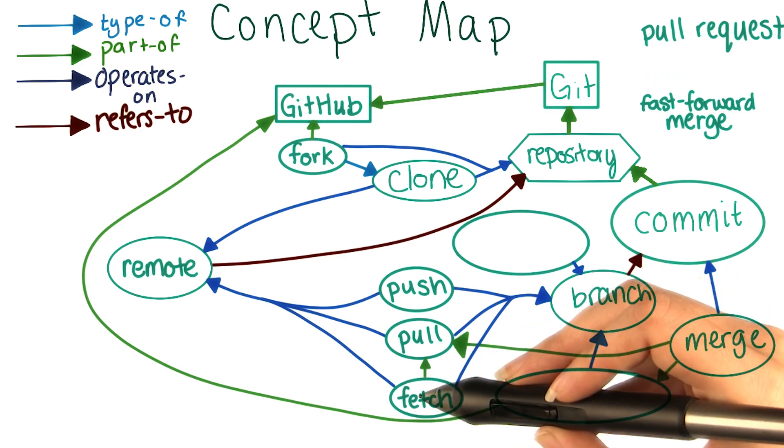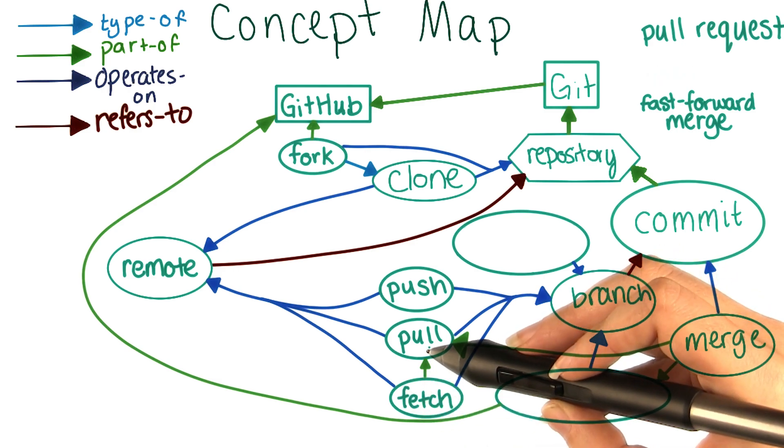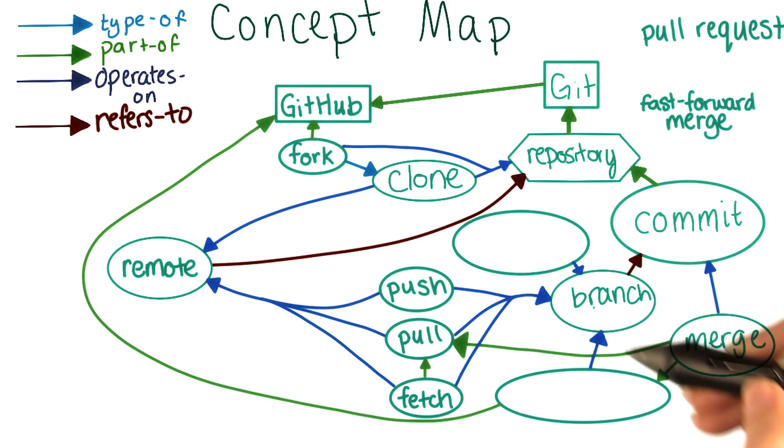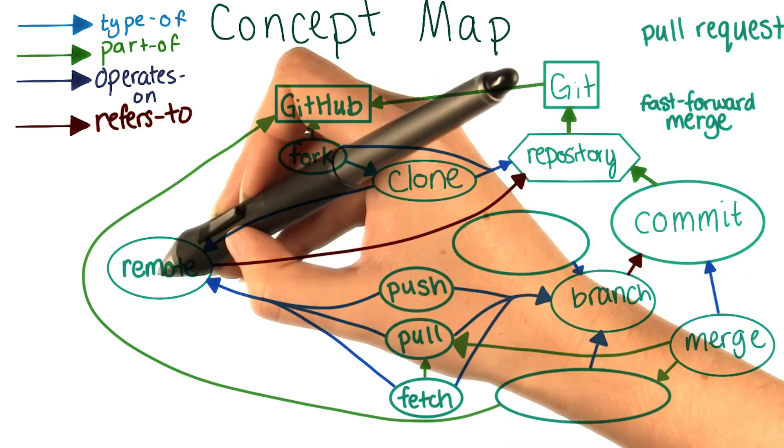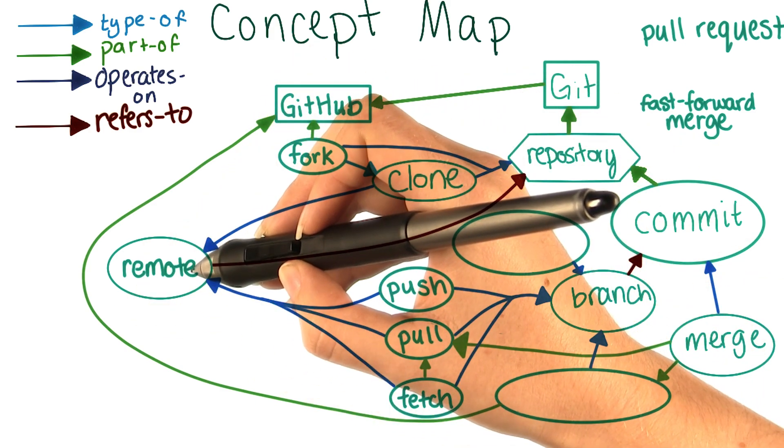Let's check that this makes sense. We know that fetching is a part of pull, but does it operate on remotes and branches? It clearly operates on remotes because you're fetching data from the remote repository.